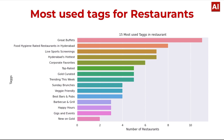Most used tags for restaurants: the x-axis represents number of restaurants and the y-axis represents tags. The mostly used tags are 'great buffet,' 'high food hygiene,' and 'rated restaurants in Hyderabad' and 'live sports screening,' which are the top tags. More than 12 restaurants use 'great buffet,' while 'gigs and events' and 'new on Zomato' are at the last place.